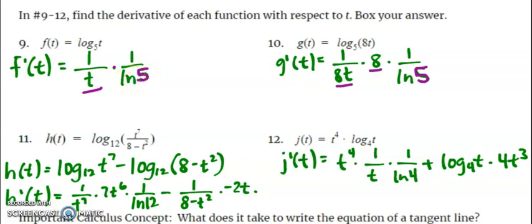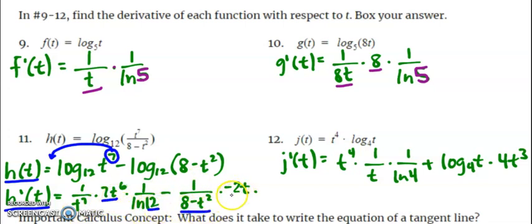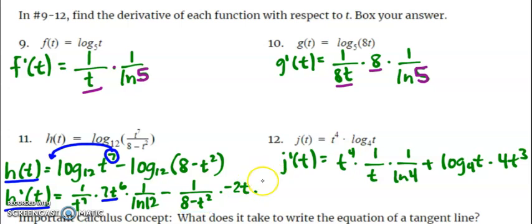Number 11 is where log properties help. I expanded the expression first — no calculus yet — then took the derivative. You could also swing the exponent 7 down before differentiating, but using log properties just means doing enough to make your calculus easier. The derivative follows: 1 over u times the derivative of u times 1 over the natural log of the base, minus 1 over u times the derivative of u times 1 over the natural log of 12. Note: there should be a natural log of 12 in that second term.